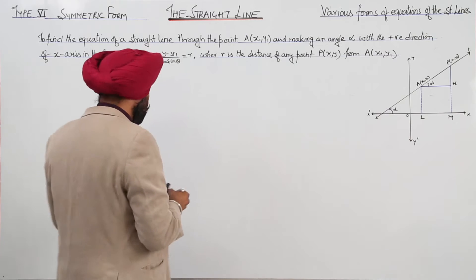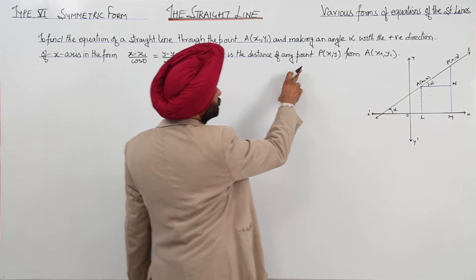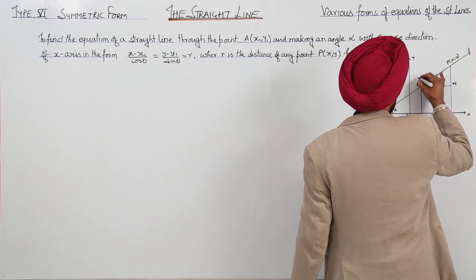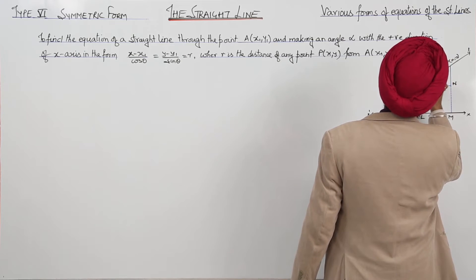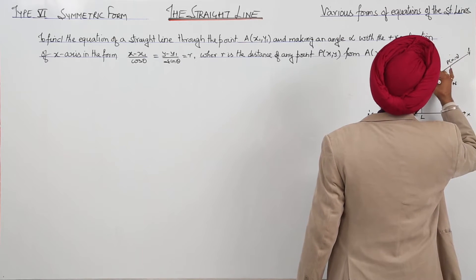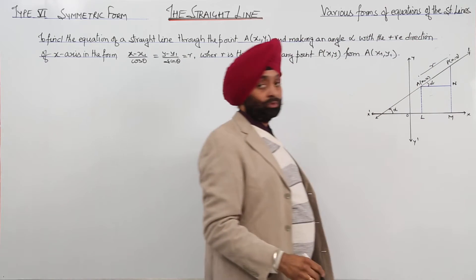Now, let us start. Where r is the distance of any point P from here, from this point to this point, this distance is r, from A at x1, y1.